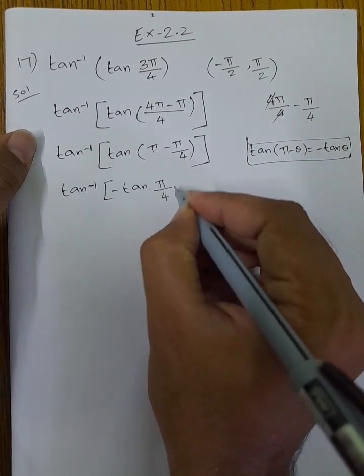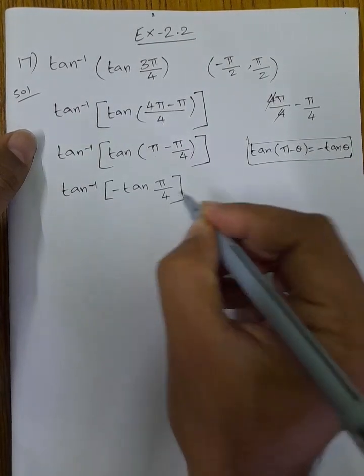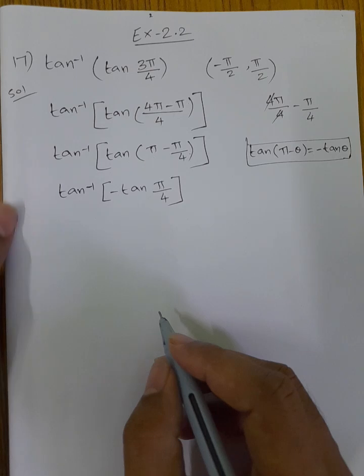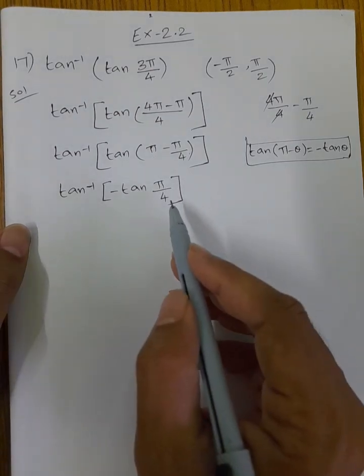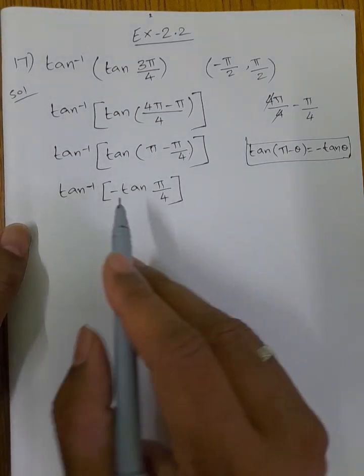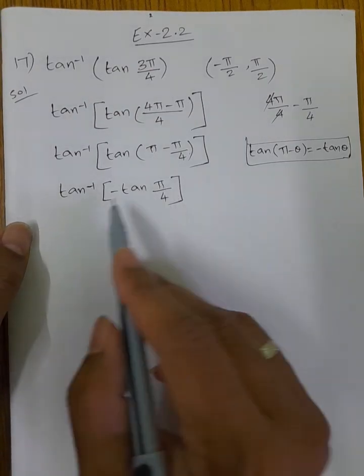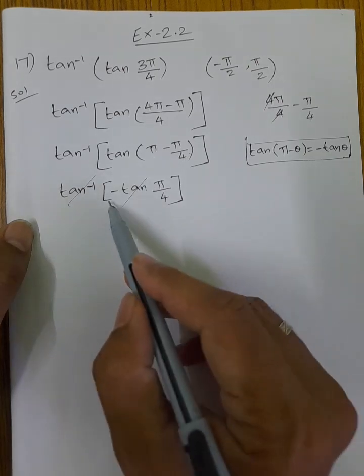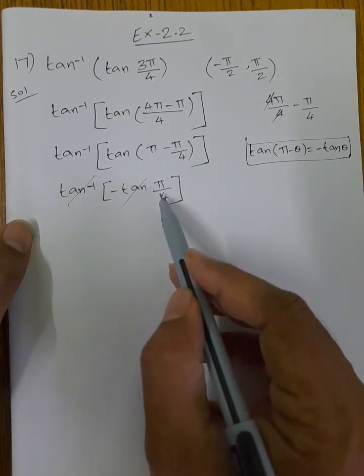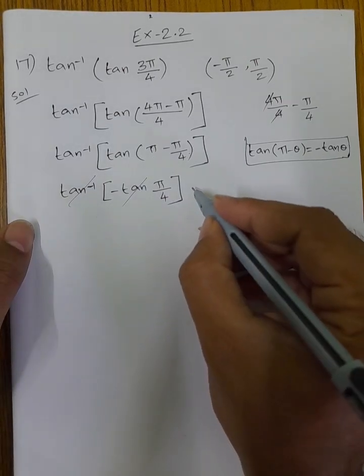So tan inverse of tan(π minus π/4). The tan inverse of tan cancels, giving minus π/4. So the final answer is equal to minus π/4.